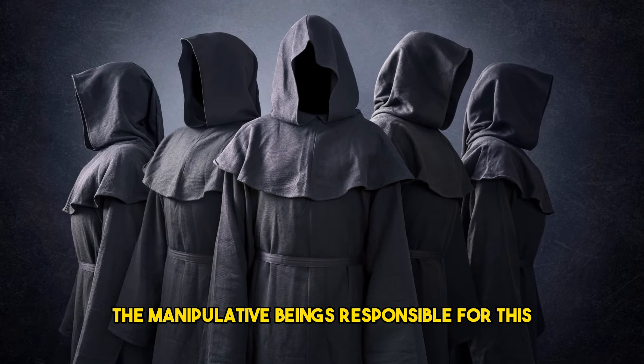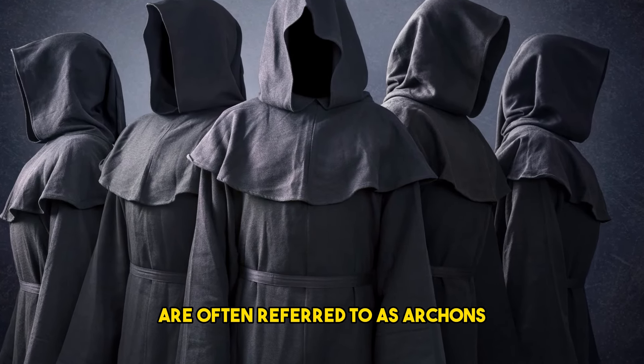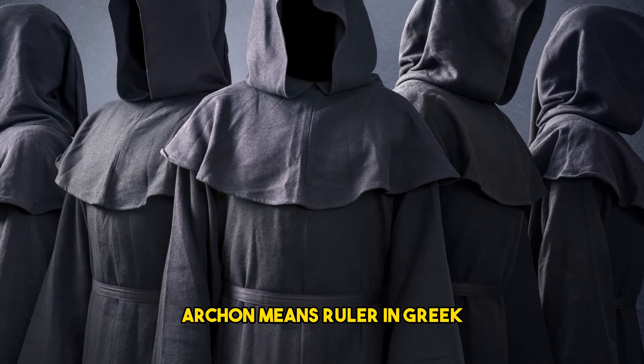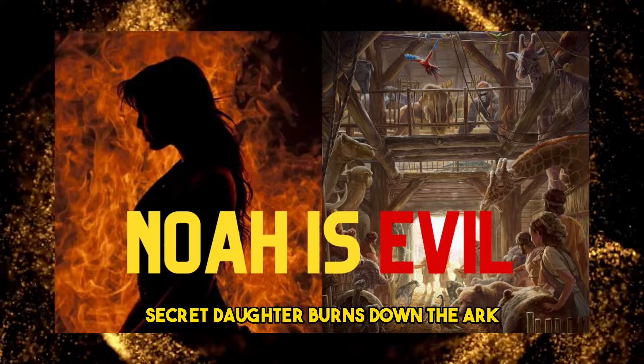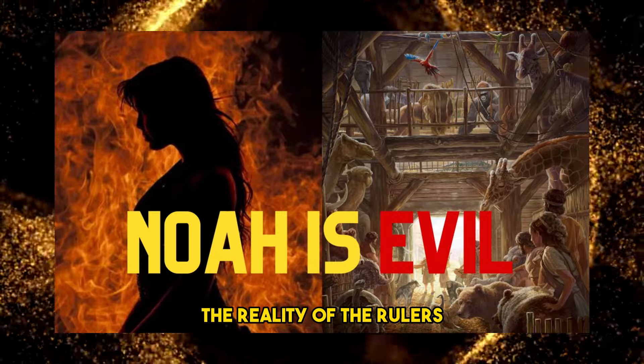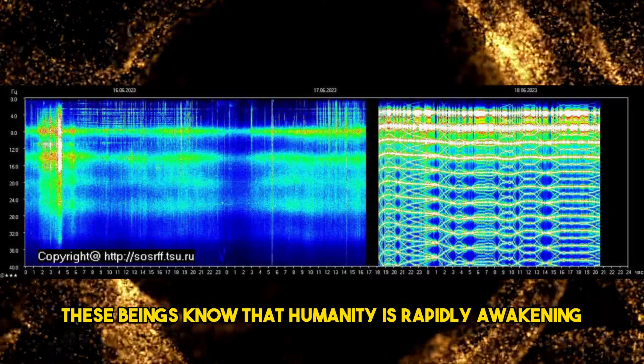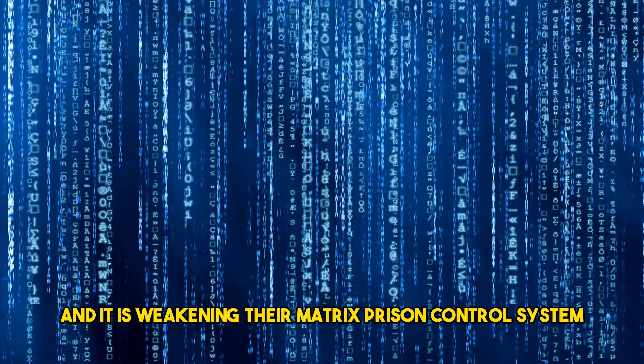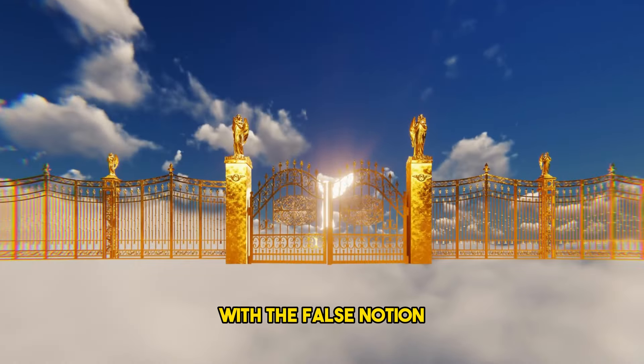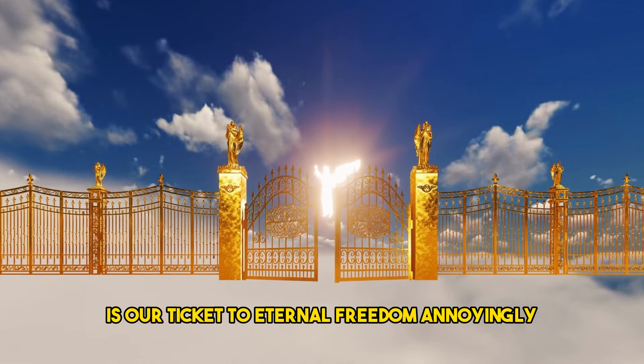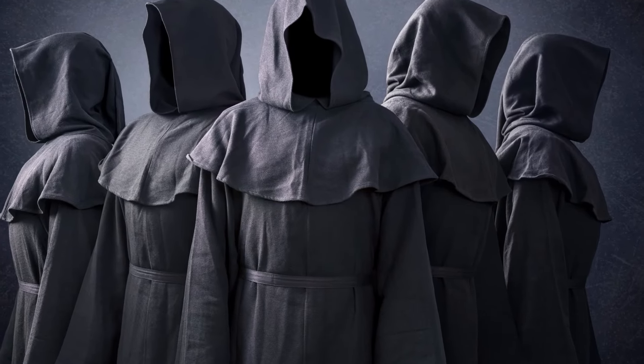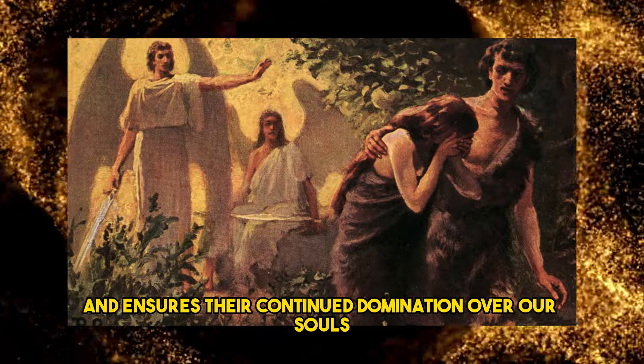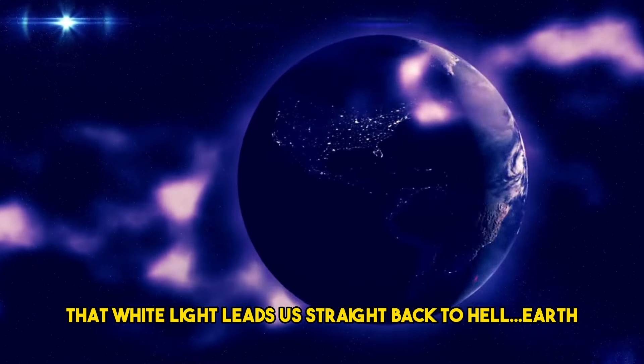The manipulative beings responsible for this are often referred to as archons. Archon means ruler in Greek. They are the architects of this earthly prison. To learn more about this, watch my video titled The Secret Daughter Burns Down the Ark, The Reality of the Rulers. These beings know that humanity is rapidly awakening and it is weakening their matrix prison control system. In response, they have tried to flood our collective consciousness with the false notion that going into the famous white light is our ticket to eternal freedom. Annoyingly, this misinformation tactic plays right into their hands and ensures their continued domination over our souls. That white light leads us straight back to hell, earth.